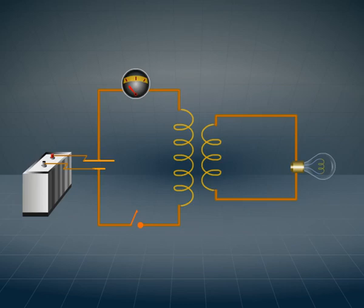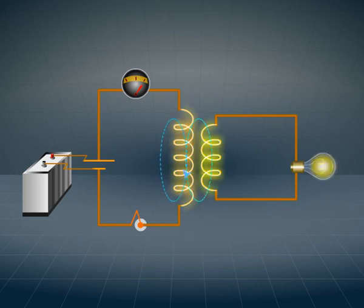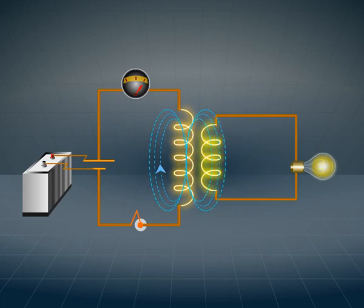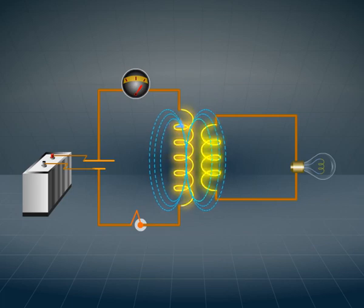Mutual inductance: when the switch in the first coil is turned on, the current in the coil rises from zero to maximum. This increase in current produces a flux change in the second coil. Due to the flux change, an induced current is developed in the second coil.